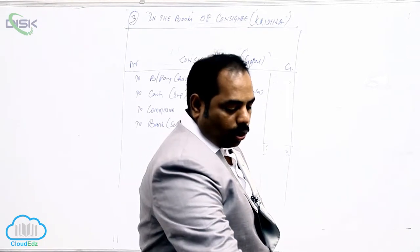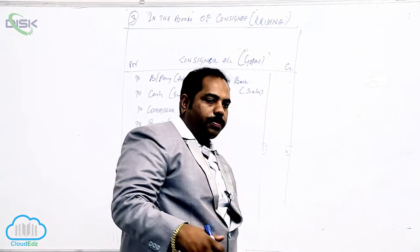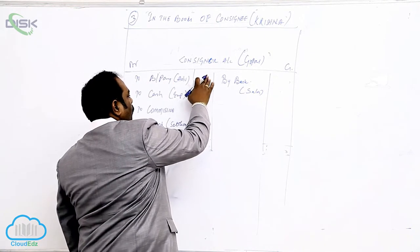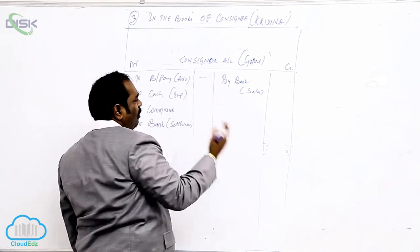Krishna says expenses amount to Rs.900. When Krishna is paying the expenses, what is the entry? There is no advance given in the problem. When we pay expense...